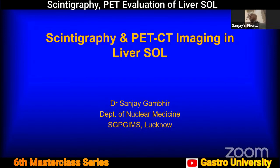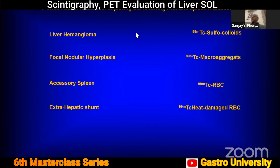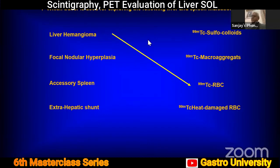Having heard a lot about anatomical imaging as the predominant approach for space-occupying lesions, I was asked to talk about scintigraphy and PET. Scintigraphy consists basically of technetium-based gamma camera imaging. There was a time when standard liver scanning with sulfur colloid was used for liver imaging of space-occupying lesions, and RBC imaging was used for focal nodular hyperplasia and liver hemangioma.